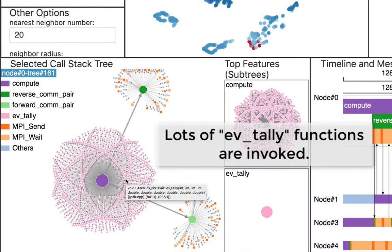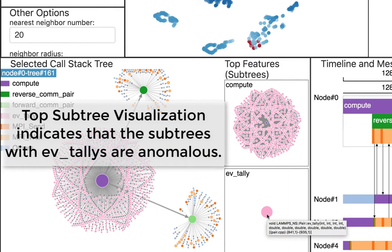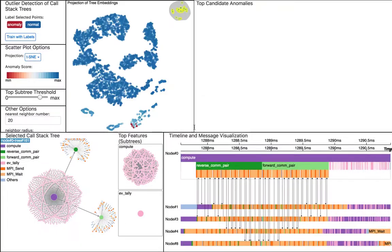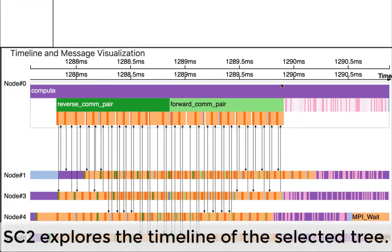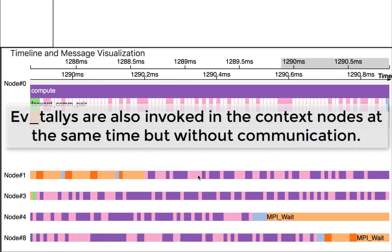The structure shows an abundance of tiny evteli functions. The top subtree visualization also indicates that the substructures which contain evteli are anomalous. In the timeline visualization, evteli functions are also invoked frequently in the context HPC nodes but without any communication.